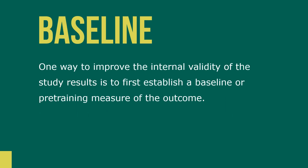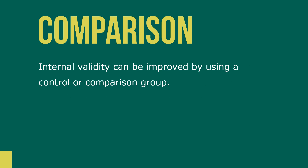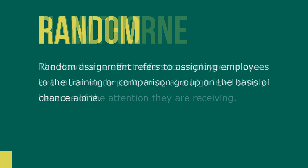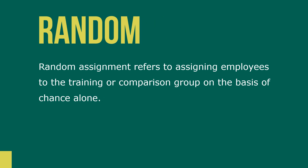One way to improve the internal validity of a study result is to first establish a baseline or pre-training measure of the outcome. Internal validity can also be improved by using a control or comparison group. The Hawthorne effect refers to employees in evaluation studies performing at a high level simply because of the attention they're receiving. Random assignment refers to assigning employees to the training or comparison group on the basis of chance alone.